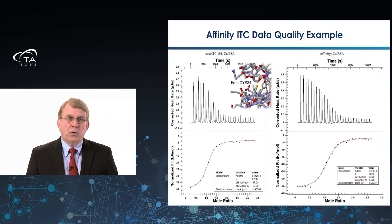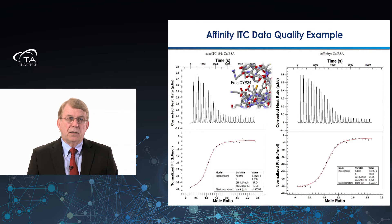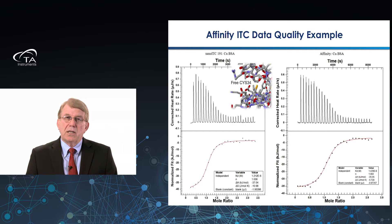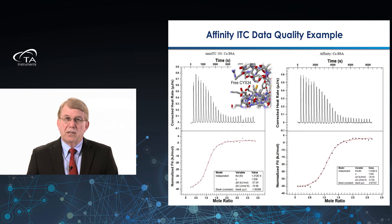For data quality, here is a snapshot of a titration of copper into BSA, a very sticky protein. On the left-hand side is our nano ITC titration, and on the right is the Affinity ITC titration. Both data sets are reasonable, but on the right-hand side, looking at the very first injection on the Affinity ITC, that peak is far more usable than what is typically seen on most ITC instruments — whether a nano ITC or other competitive instruments. The data quality on the Affinity ITC is very high, giving you an advantage with the highest level of data quality on every experiment.